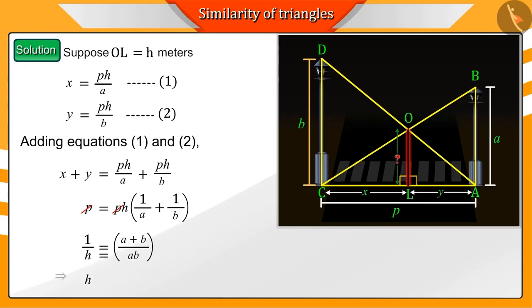We get h is equal to ab by a plus b. That means the height of the intersecting point is h equals ab divided by a plus b.